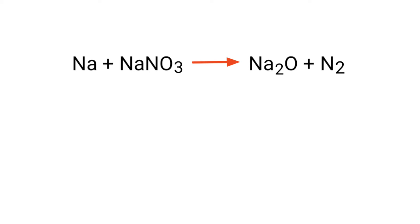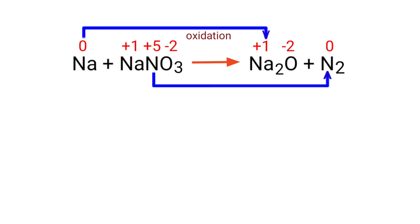Figure the reducing and oxidizing agents by the rules of assigning oxidation numbers. In this equation, sodium has a charge of 0 and it's changing into plus 1, so sodium is being oxidized. Nitrogen has a charge of plus 5 and it's changing into 0, so nitrogen is being reduced.